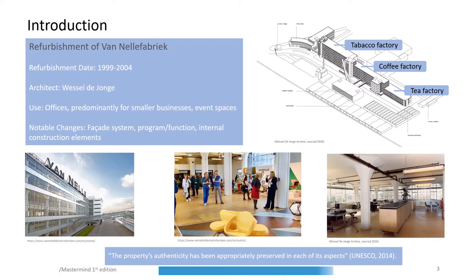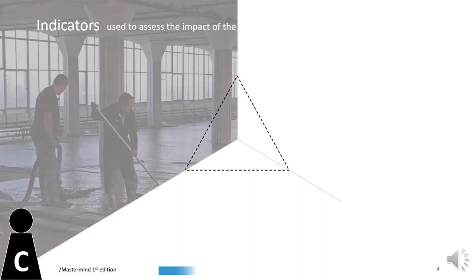To assess the impact of the intervention regarding conservation, three indicators were chosen. Durability, or how the deterioration process is contained to ensure that the high aesthetic quality remains.